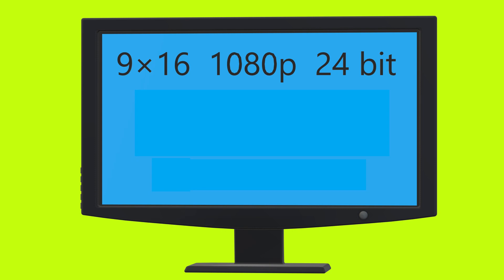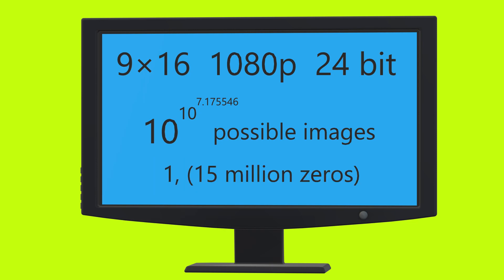Now those numbers are big, sure, but they aren't even close to the number of distinct images that a 9x16 1080p 24-bit TV screen can make, which is 10 to the 10 to the 7.175. It's like a one with about 15 million zeros behind it.